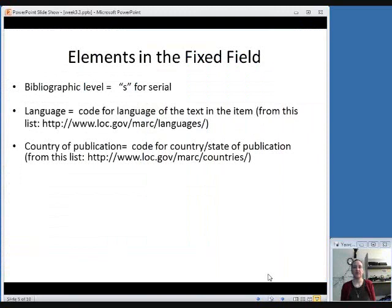So I just want to talk quickly about a few of the elements that are important for serial records. I'm not going to have you worry about the fixed fields at all in your assignments for this week, but I do want to just let you know that they're there. The bibliographic level element will be coded S for serial as opposed to M for monograph, which is what you may be used to.